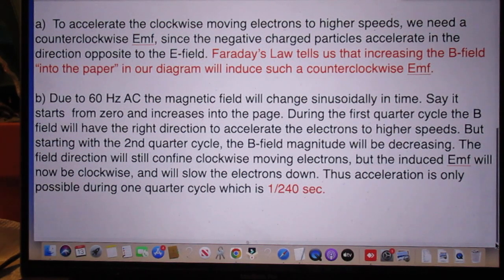During the first quarter cycle, the B field will have the right direction to accelerate the electrons to higher speeds. But starting with the second quarter cycle, the B field magnitude will be decreasing.